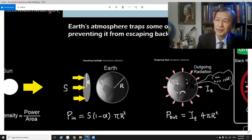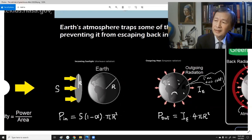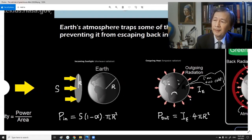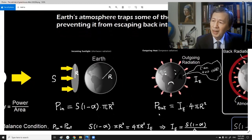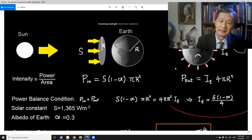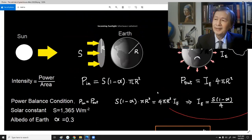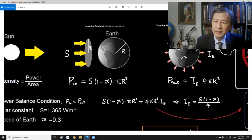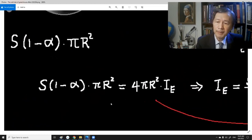How about the power out? Well, we can argue that after a certain amount of time, the absorbed solar energy were evenly distributed around the earth. The intensity of earth multiplied by the area of the surface will determine the power output. According to the energy conservation, or in this particular case, the power balance condition, the power in and power out must be equal.